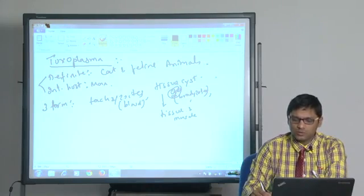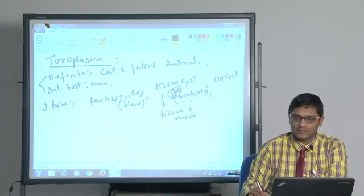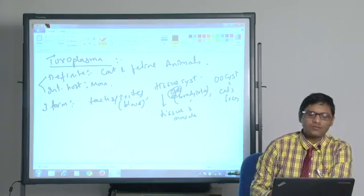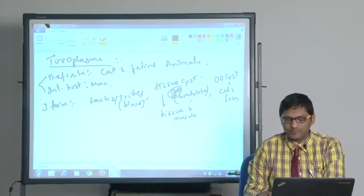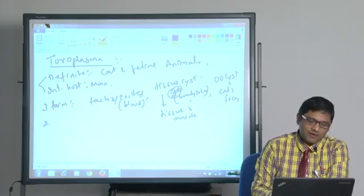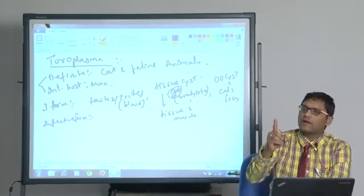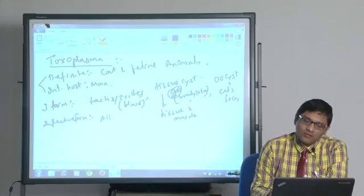Third is oocyst. Oocyst is seen in cat species. So, three morphological forms are there, and if they ask you which is the infective form, the answer is it is the only parasite where all the morphological forms are infective.